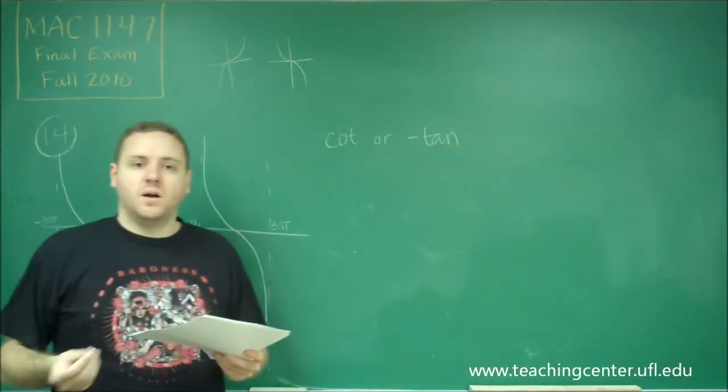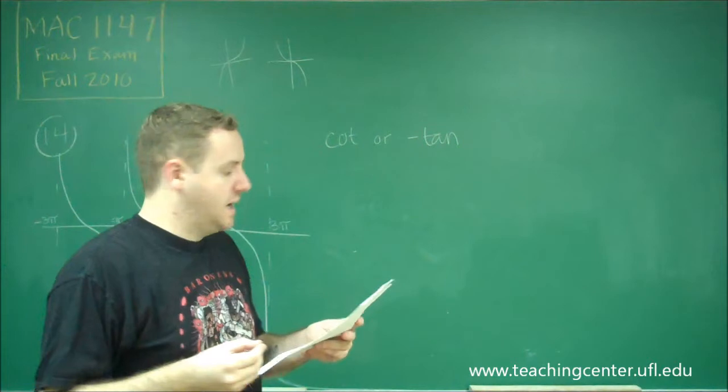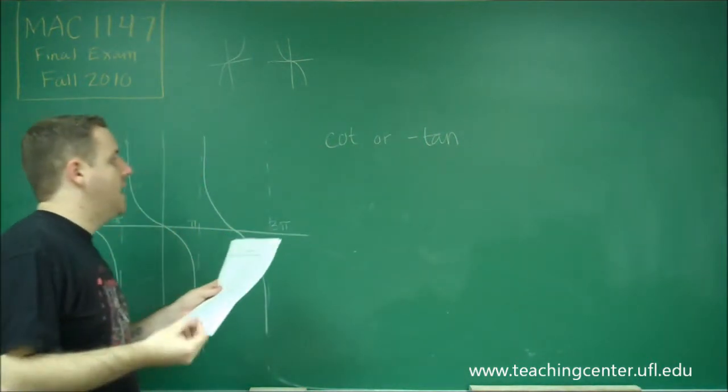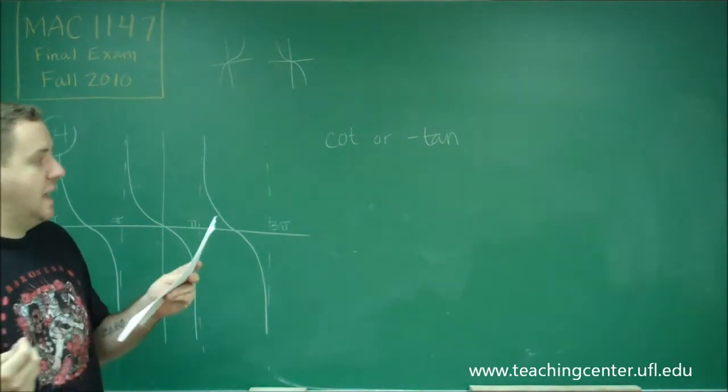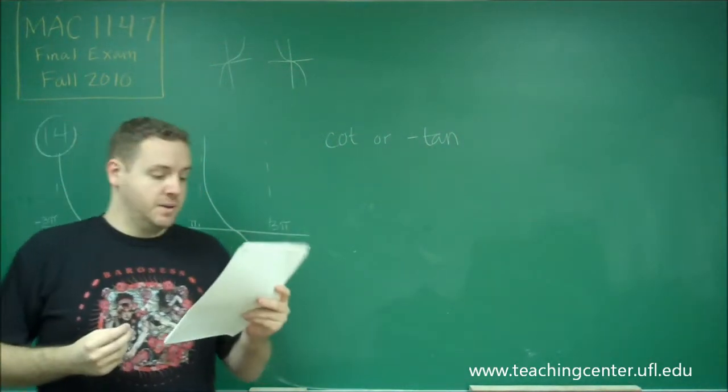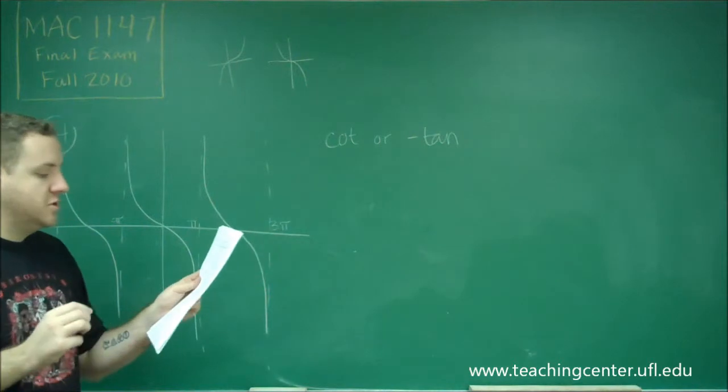Right away that can get us a few answers out of the way. So it could be A and it could not be B or C, because that gives you negative cotangent and tangent. We know that has to be cotangent or negative tangent.